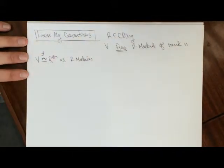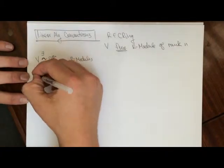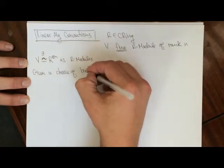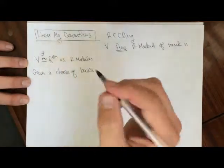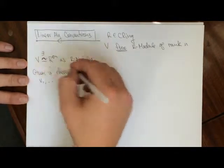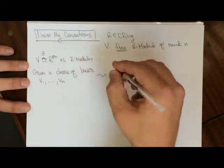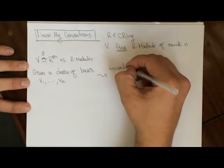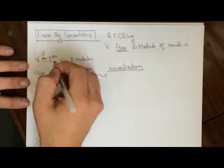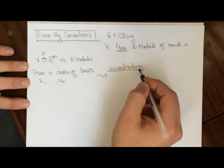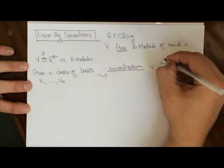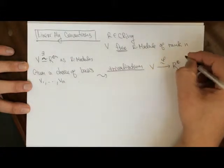This is what it means to be free. Given a choice of basis v1 through vn of V, what we can do is get a trivialization. By a trivialization, we mean one of these particular isomorphisms. The definition of a trivialization of a free R-module is an isomorphism phi from V to R^n.